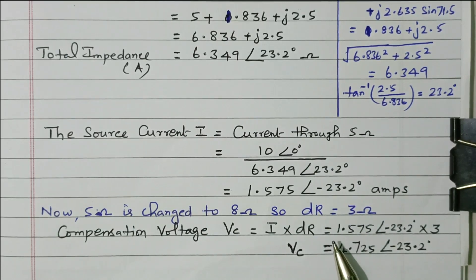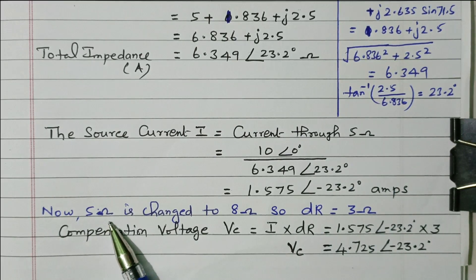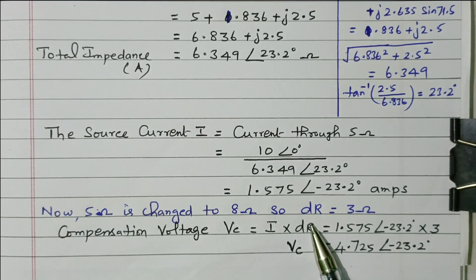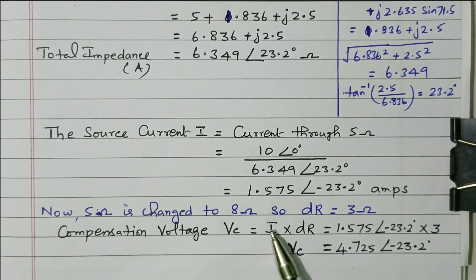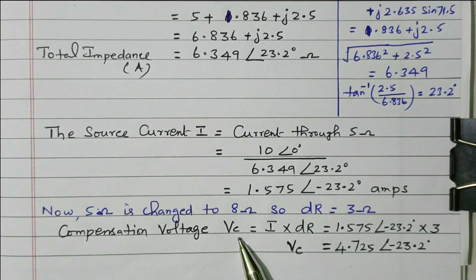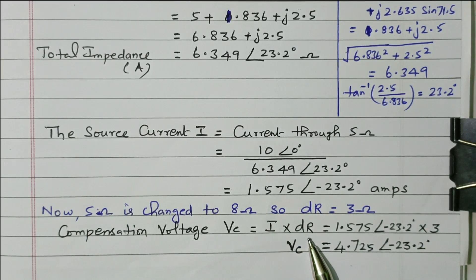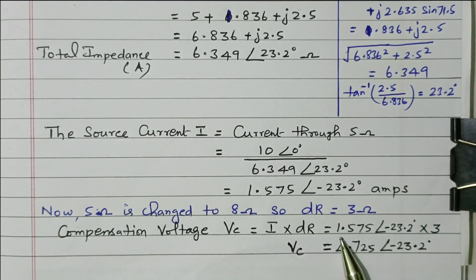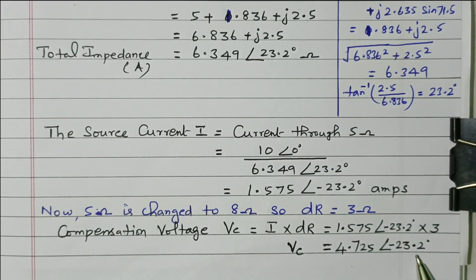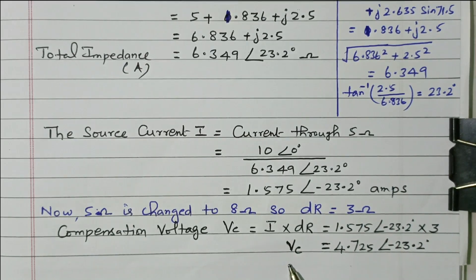From this, we can calculate the compensation voltage. The change in resistor: 5 ohm is changed to 8 ohm, so delta R equals 8 minus 5 equals 3 ohm. From that, we calculate Vc. Vc equals I into delta R. I is 1.575 at angle minus 23.2 degrees, and delta R is 3. Multiplying these: 1.575 into 3 equals 4.725, with angle minus 23.2 degrees. So the compensation voltage is 4.725 at angle minus 23.2 degrees.